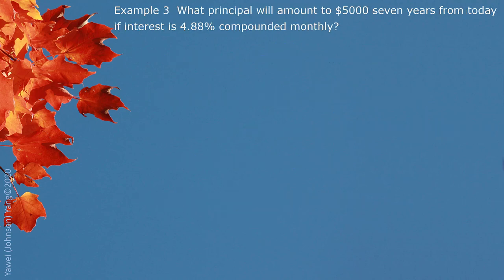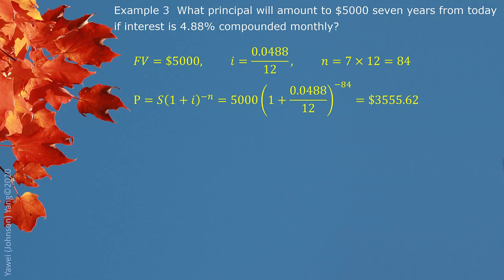Example 3: What principal will amount to $5,000 seven years from today if interest is 4.88% compounded monthly? We have $5,000 as the future value. The periodic interest rate is 4.88% divided by 12 since interest is compounded monthly. The compounding period for 7 years multiplied by 12 gives us 84 months. Putting all information into the formula and finishing the calculation, the principal is $3,555.62.